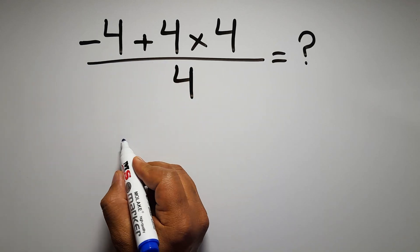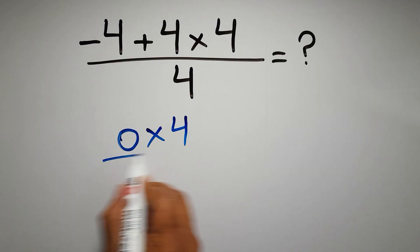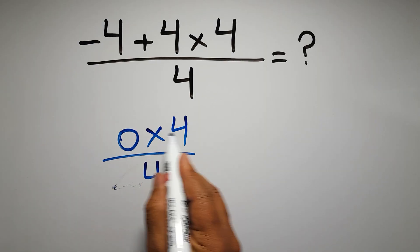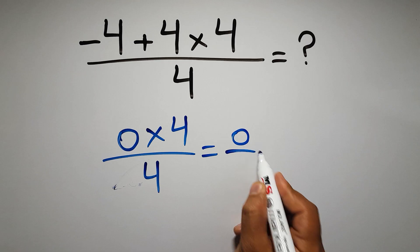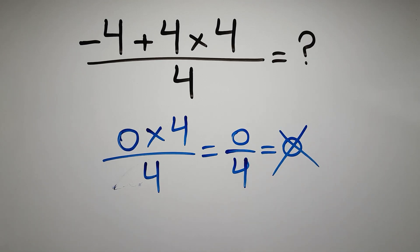Negative 4 plus 4 gives us 0, so 0 times 4 over 4. 0 times 4 is just 0, and 0 over 4 is 0. But this answer is not correct because according to the order of operations, first we...